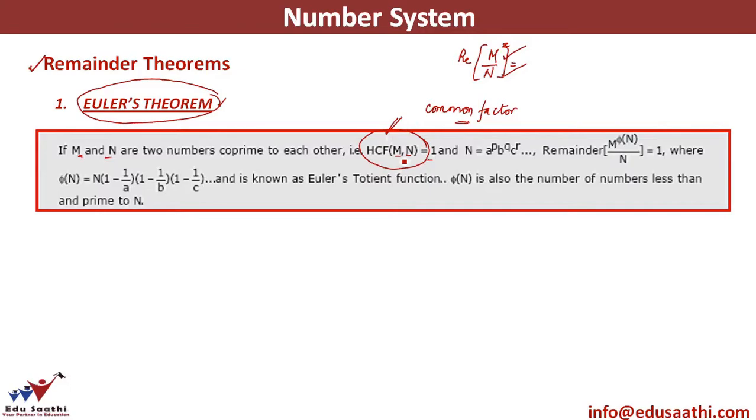So the first thing that we have to look at is m and n should have an HCF of 1. Now the next step is do the prime factorization of n. So prime factorization means again a, b, c raised to p, q, r, the similar thing that we have done while we were doing the question on remainders.